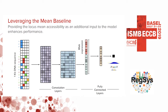We leverage this insight by going back to our neural network architecture and adding the mean accessibility as a third input to the model, which substantially improves predictive performance as I will show shortly.